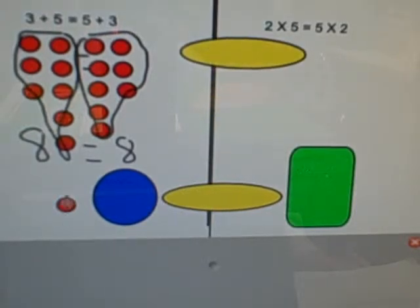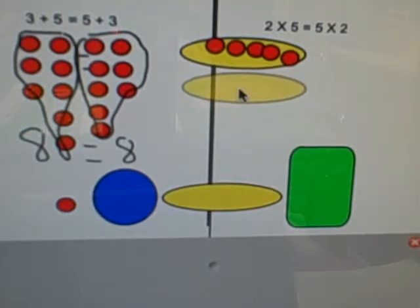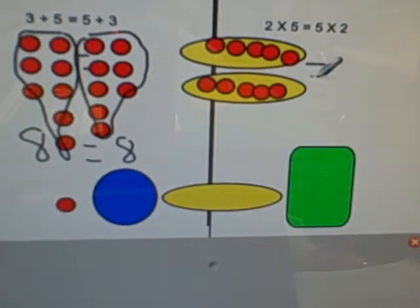And this will be my 2 times 5 over here. 1, 2, 3, 4, 5. There's a group of 5. And it's 2 times 5, so I'm going to make 2 groups of 5. 1, 2, 3, 4, 5. So there's my 2 groups of 5. What's 2 times 5? It's the same thing as 5 plus 5. That's right, it's 10.